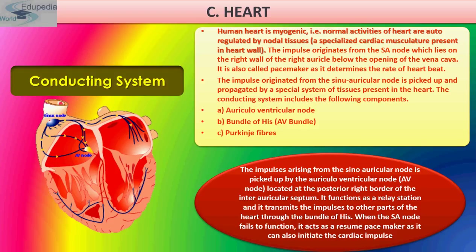A group of specialized fibers called the AV bundle, also known as the bundle of His, originates from the AV node. It divides into left and right bundle branches, which pass through the interventricular septum. The bundle branches give rise to Purkinje fibers within the ventricular myocardium.